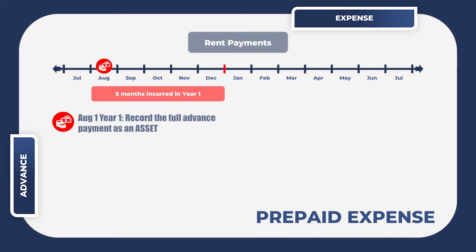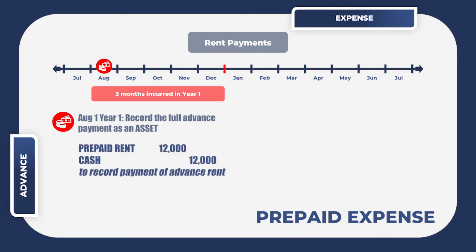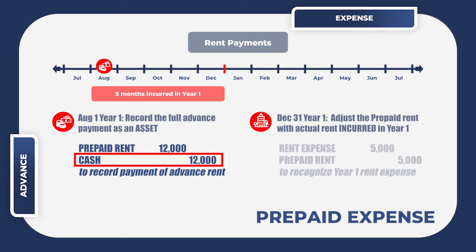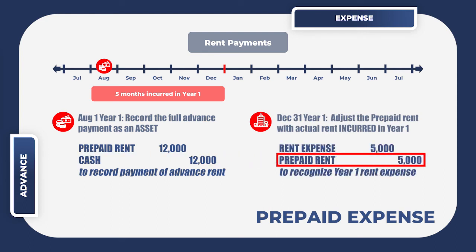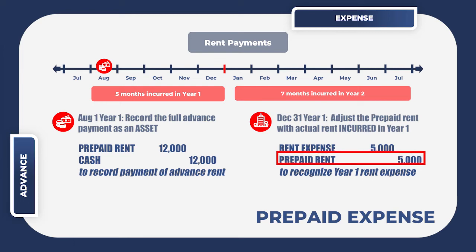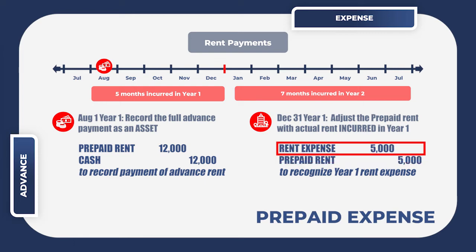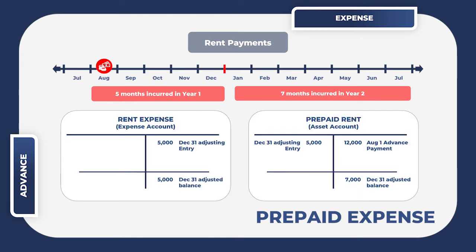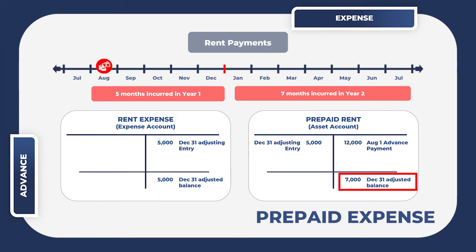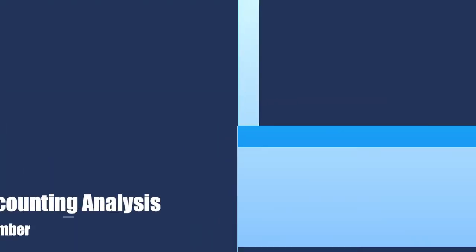The entry to record the payment of rent is a debit to prepaid rent and a credit to cash. Upon year end, your adjusting entry should decrease the amount of prepaid rent for the seven remaining months of the contract by crediting prepaid rent by $5,000 and debiting rent expense for the same amount. If you follow the T-accounts of these two, you will see that in the expense portion we have five months of rent and in the asset portion we have seven months remaining.